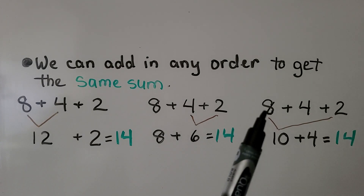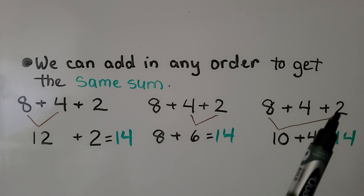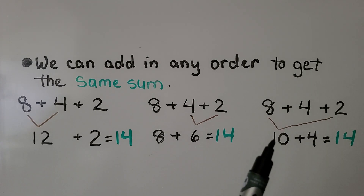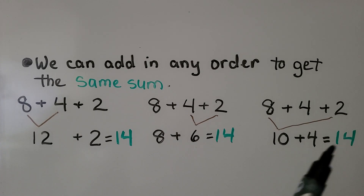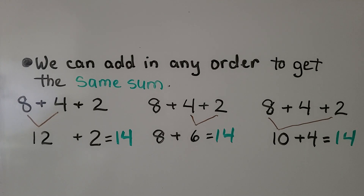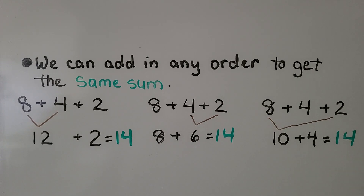We can also group the eight and the two together to make a 10, then add the four — that equals 14. Which one of these do you think is the easiest way? I like the make-a-10 strategy. I think that's easiest for me.